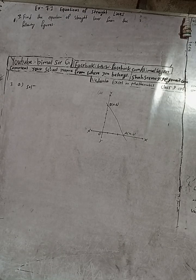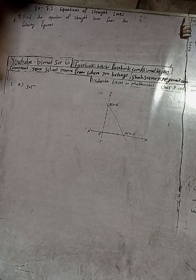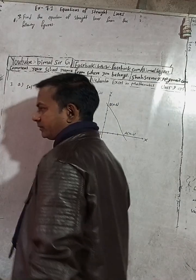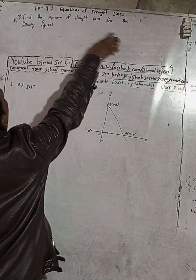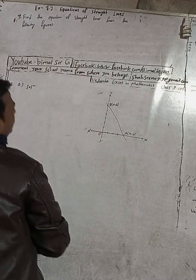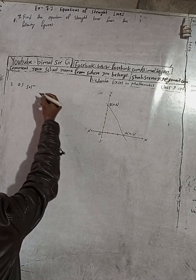Hi class 9 and 10 students, welcome back to Bimalsarji YouTube channel. This is question number 3, exercise 7.2, equations of a straight line, Vedant Excel in optional mathematics. The question is: find the equation of a straight line from the following figure. This is figure one solution.